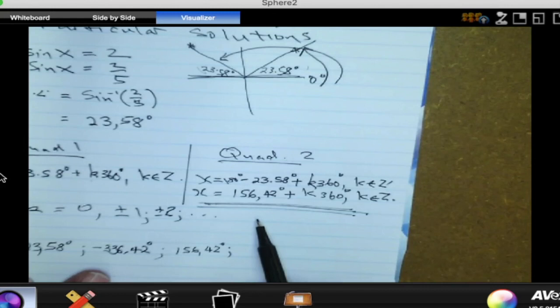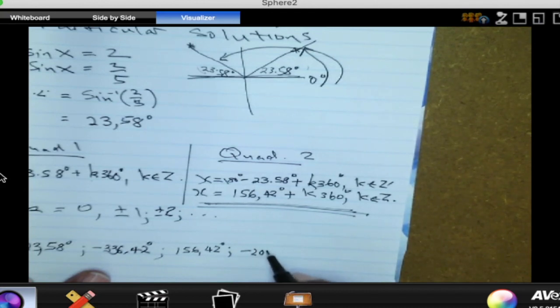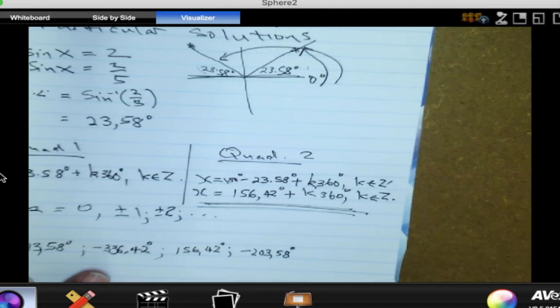But try K equal to negative 1. So 156.42 subtract 360. I think that one will work. What do you think? Negative 203.58. Yeah. And this is within the range.